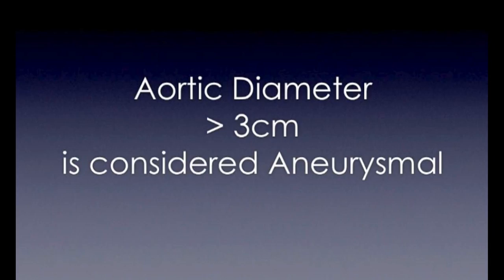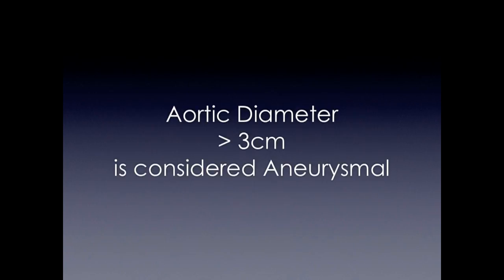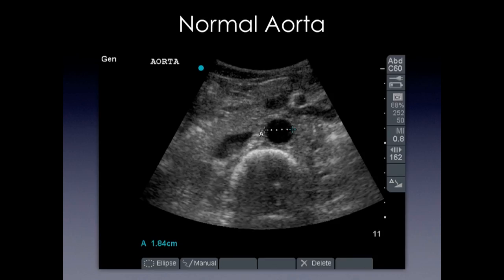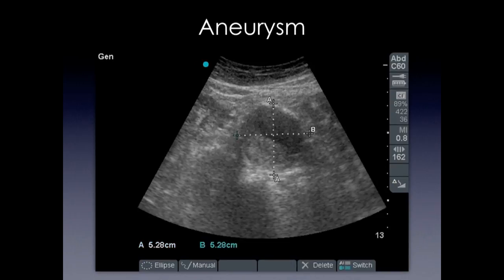When we measure the aorta, we want to make sure it's no greater than 3 centimeters — anything larger would be considered an aneurysm. Here we have a 1.84 centimeter diameter, which is pretty normal. And then we have another patient that clearly has an aneurysm: by definition it's greater than 3 centimeters, and it measures 5.28 centimeters.